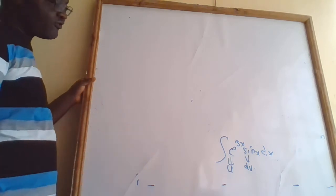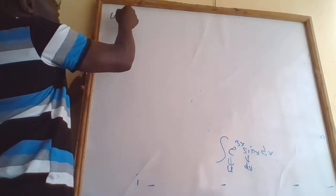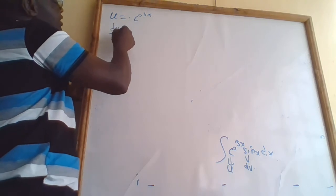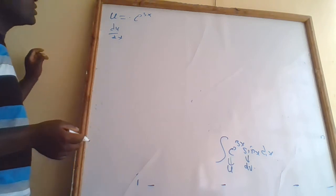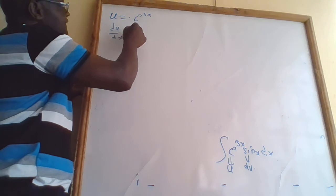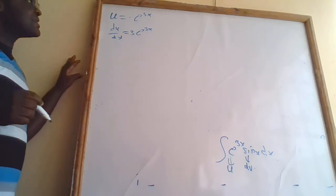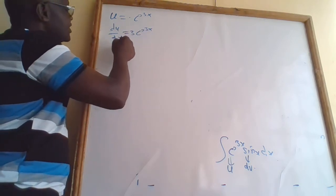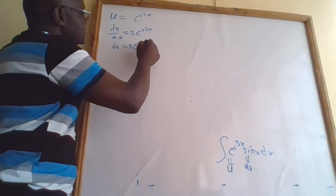We have the integral of e^(3x) · sin(x) dx. We say that u = e^(3x). Therefore, du/dx — we differentiate this equation. Since this is a function of a function, when we differentiate e^(3x) we get 3e^(3x). Therefore, du = 3e^(3x) dx.